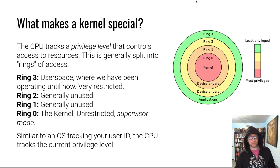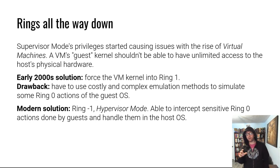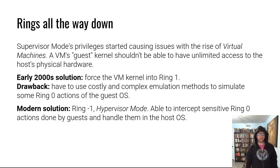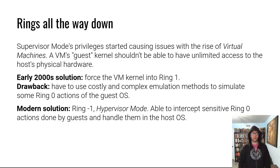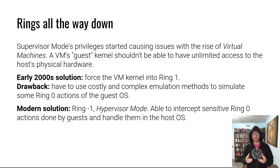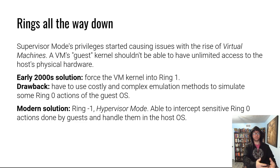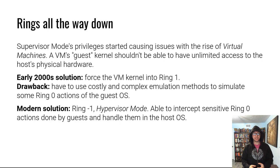Beyond ring 0, there's actually a ring negative one. The limitations of just having ring 0 as the kernel's super-authority started showing cracks in the early 2000s with the rise of virtual machines. A virtual machine is basically a guest system you run inside your computer — for example, running Linux if you're on Windows, or Windows if you're on Linux, or for cloud providers renting out VMs.